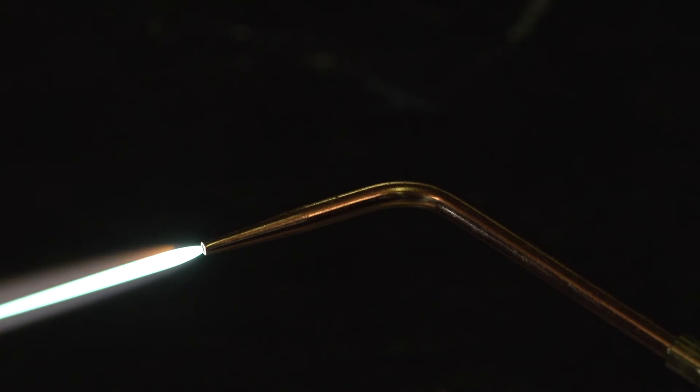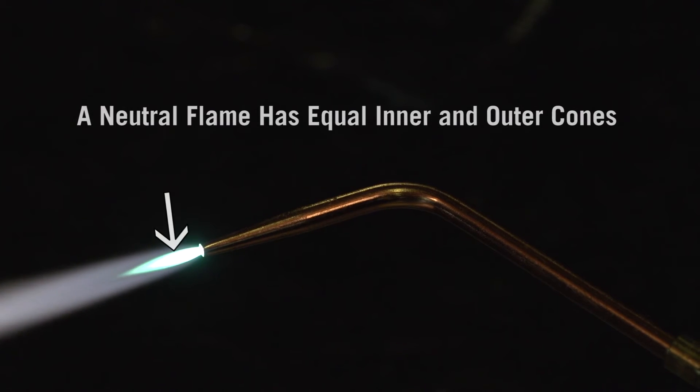Continue to add oxygen until the acetylene feather disappears and the outer cone becomes nearly equal with the inner cone.